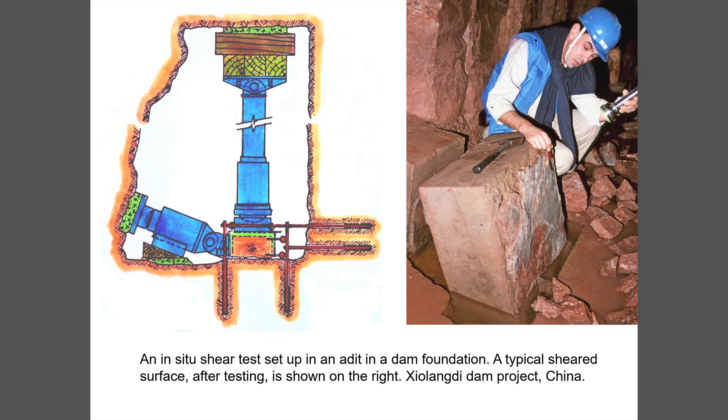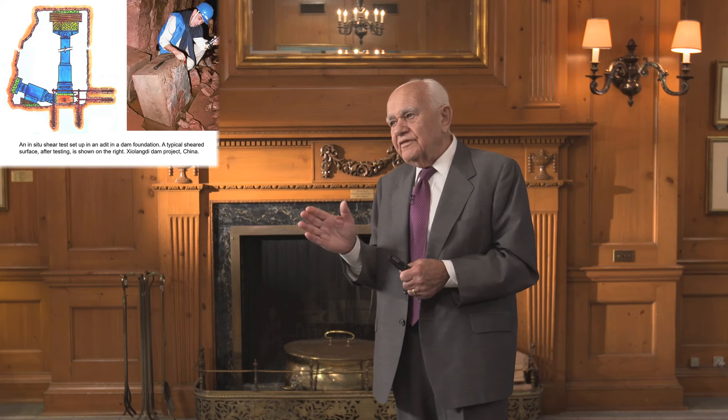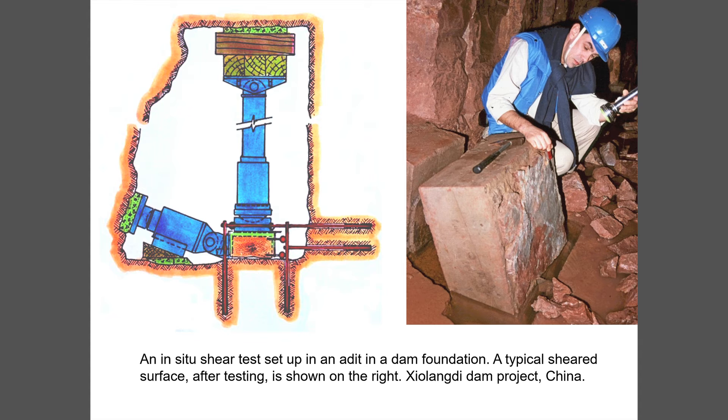This is a dam project in China where in-situ shear testing was done. A vertical hydraulic jack applies the normal load on the specimen cut out as you mine the trial tunnel, while an inclined jack applies the shear load, with instrumentation to measure deformations. On the right you see the shear surface after testing. I remember visiting France with a dam engineer Pierre Lund, who showed me a large test he'd done — it cost a lot of money and gave him just one point on a curve, and he said he'd never do that again. We now tend to measure friction angle and add roughness characteristics of the sheared surface.